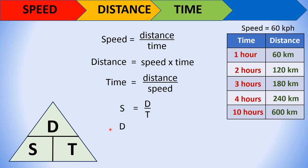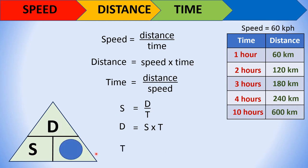To solve for distance, cover D — what remains is S and T side by side, so you multiply: D = S × T, distance equals speed times time. To solve for time, cover T — what remains is D over S, so T = D/S, time equals distance divided by speed. We'll use this in our computations.